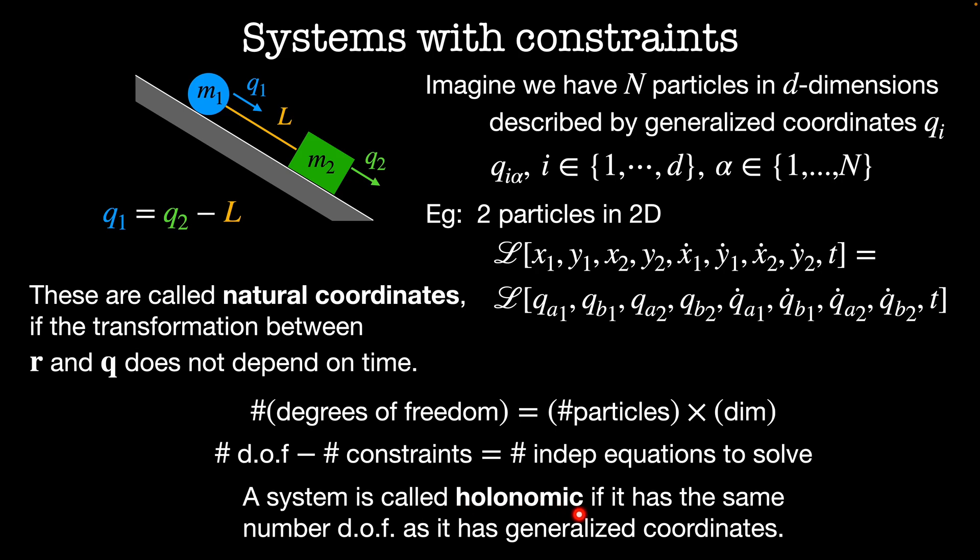A system is called holonomic if it has the same number of degrees of freedom as it has generalized coordinates.